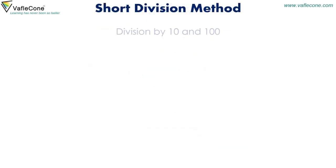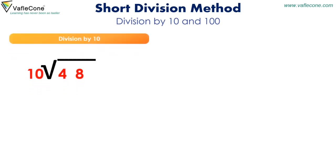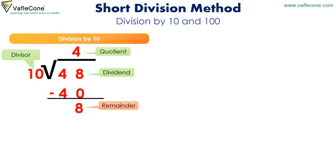Short division method — Division by 10 and 100. Division by 10: here 48 is the dividend and 10 is the divisor. 10 into 4 is equal to 40; subtracting from 48, we are left with 8. So when a number is divided by 10, the digit at the 1's place is the remainder and the number formed by the remaining digits becomes the quotient.